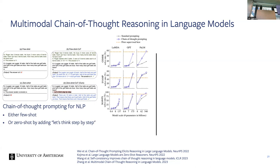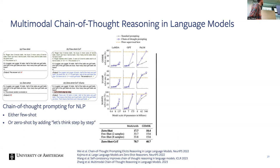Zero-shot chain-of-thought simply adds the phrase 'Let's think step by step' to the query — no additional labeled examples needed. This produces dramatic improvements: for large models like LaMDA, GPT, and PaLM, tasks that were previously unsolvable become solvable. On arithmetic benchmarks like GSM8K, just adding 'Let's think step by step' improves performance by an enormous margin.